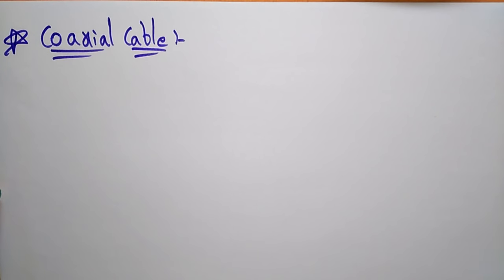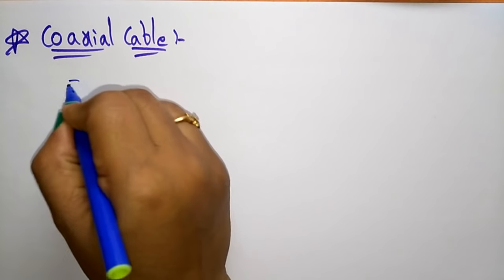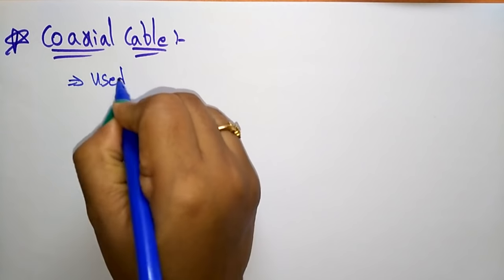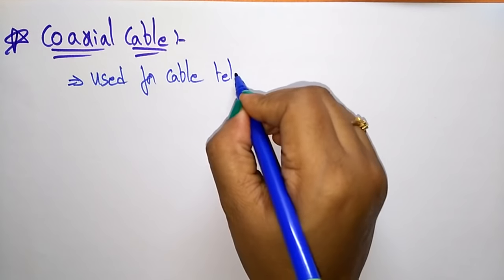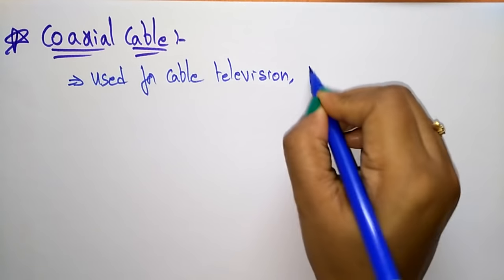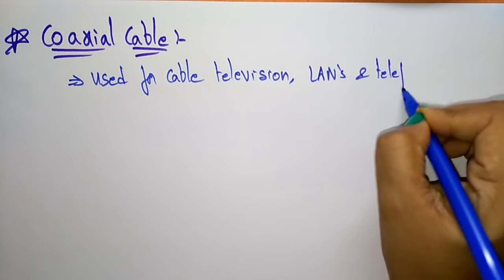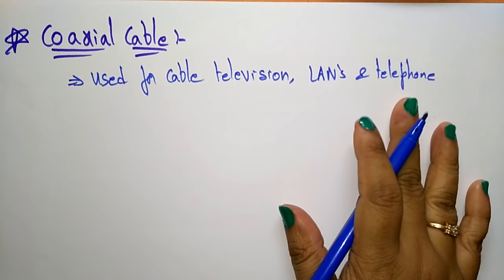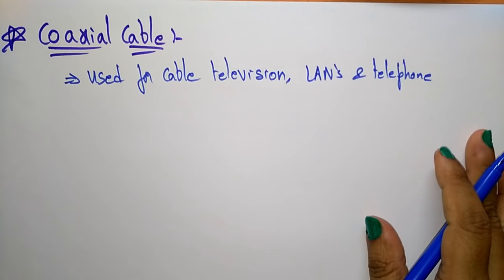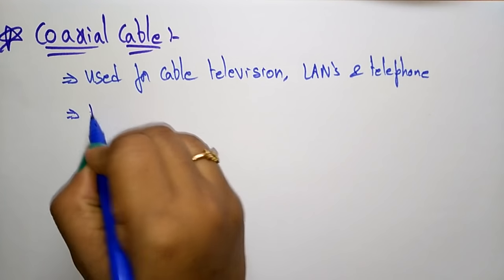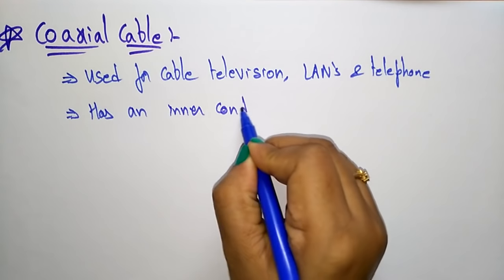Now let us see the coaxial cable. The coaxial cable is used for cable televisions, local area networks, and telephones. So for all these — televisions, LANs, and telephones — we are using coaxial type cables.